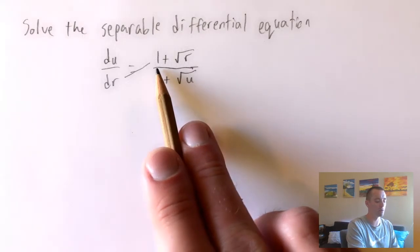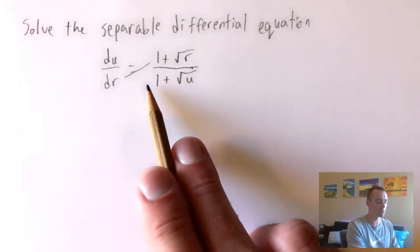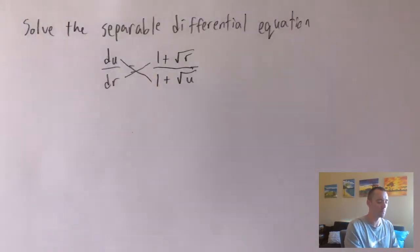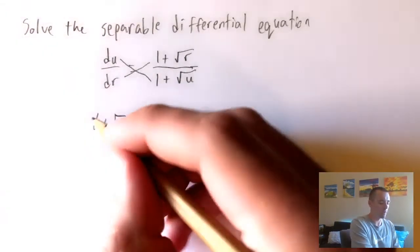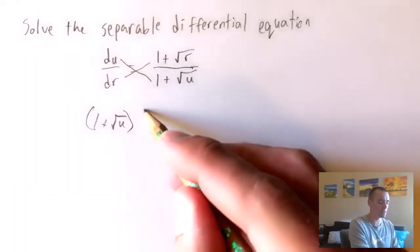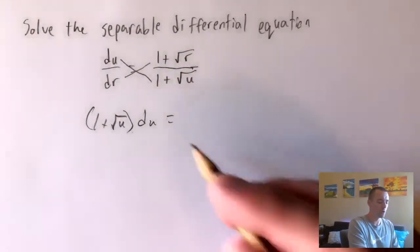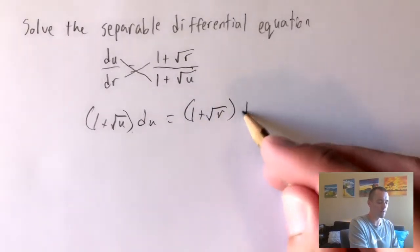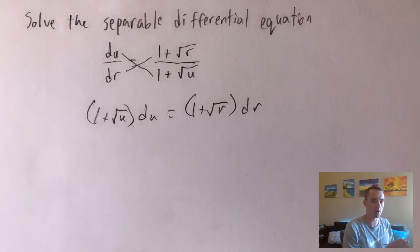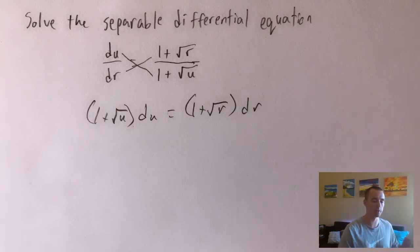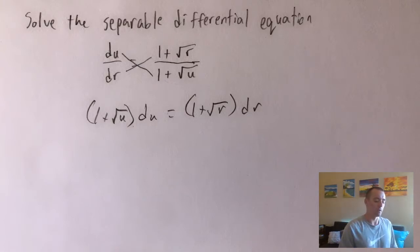What we can do right off the bat is cross-multiply, since we have one fraction equals another fraction. We cross-multiply the denominator of one times the numerator of the other and set that equal to the denominator of this one times the numerator of this one. Doing that, we get (1 plus the square root of u) du equals (1 plus the square root of r) dr. We've separated our variables — all the u's are on the same side as du, and all the r's are on the other side with dr.